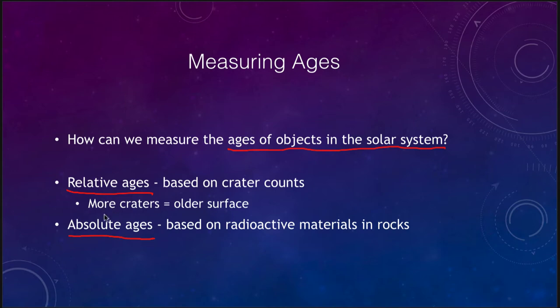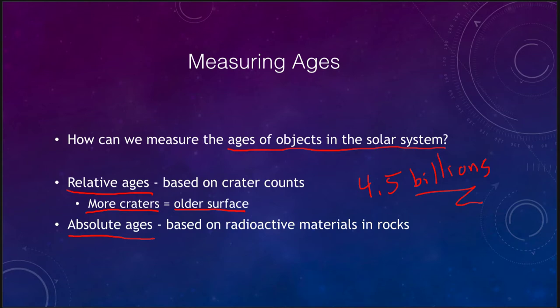Essentially, the more craters you see on an object, the older the surface is. Everything in the solar system is about four and a half billion years old, but that does not mean their surfaces have been unchanged all that time. The moon has been relatively unchanged over the last few billion years, looking essentially the same as it did a billion or two billion years ago. Other surfaces, like Earth's, look nothing like they did a couple of billion years ago. So this tells you not how old the object is, but how long it has been since it was resurfaced.